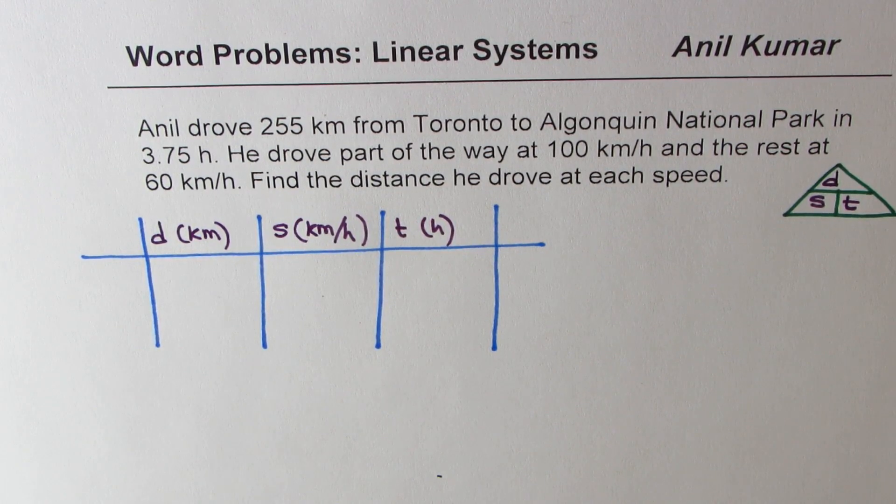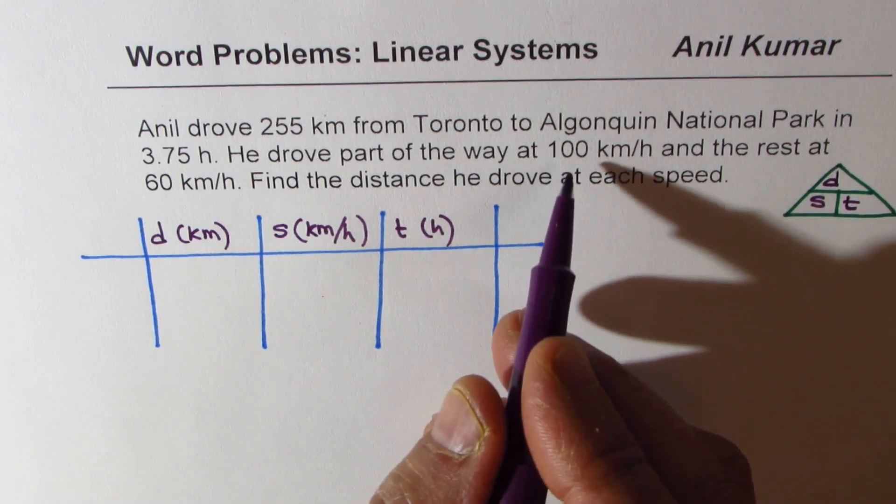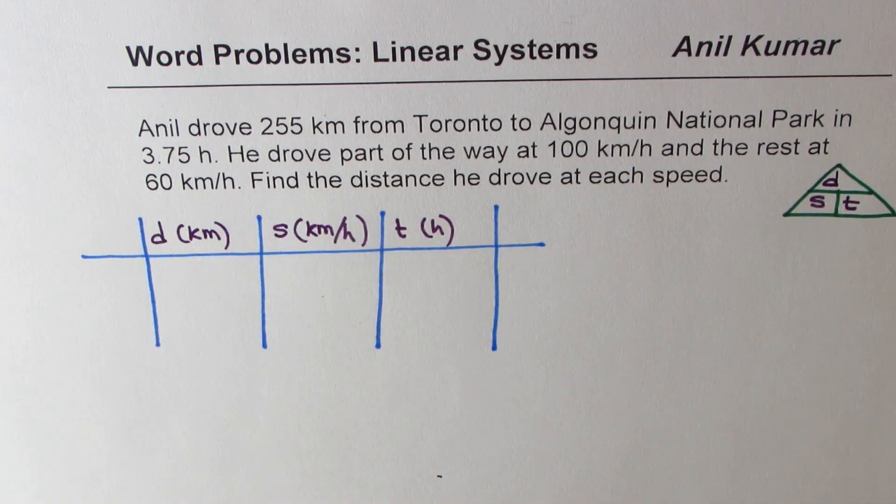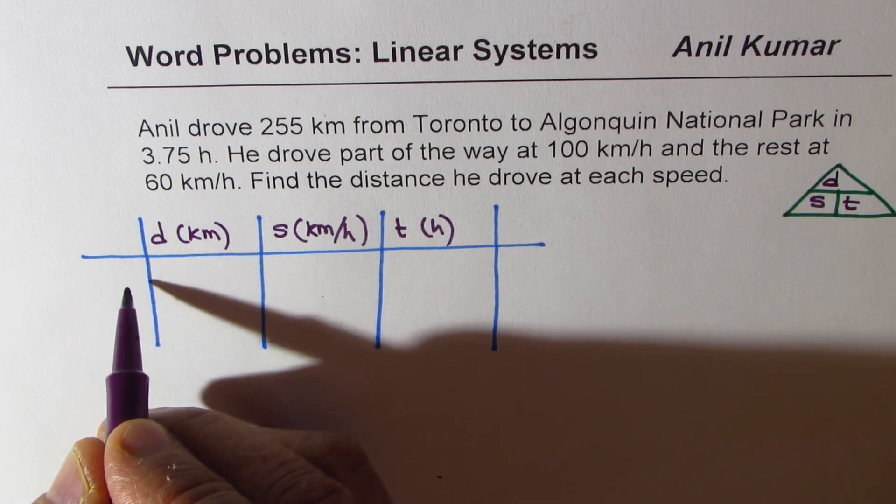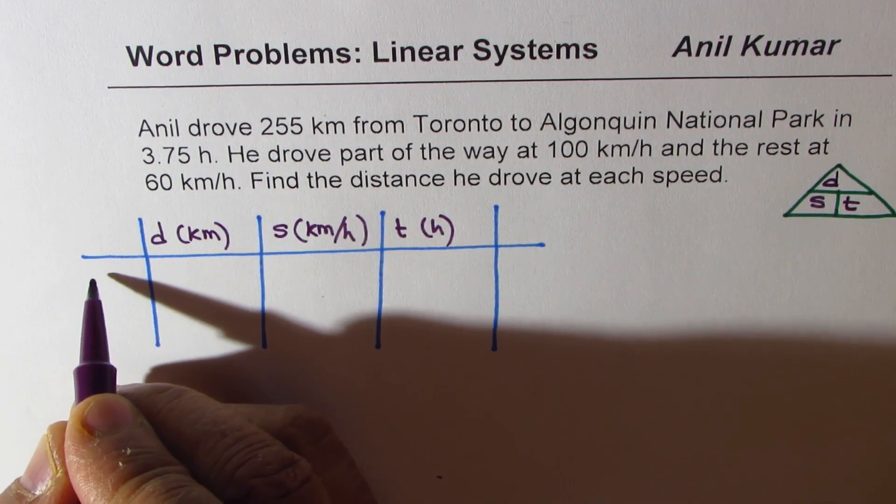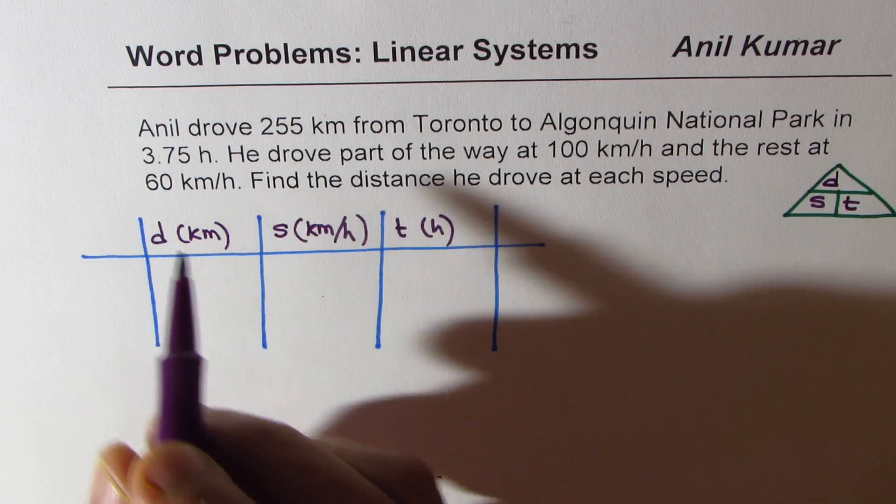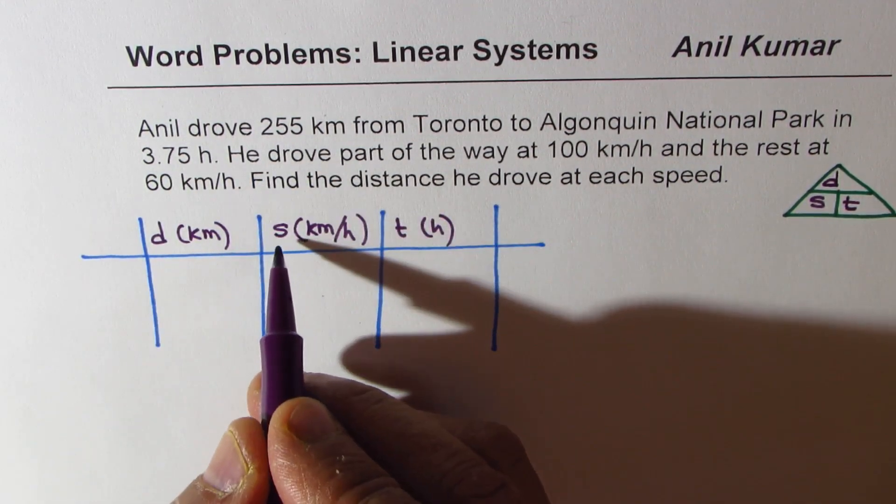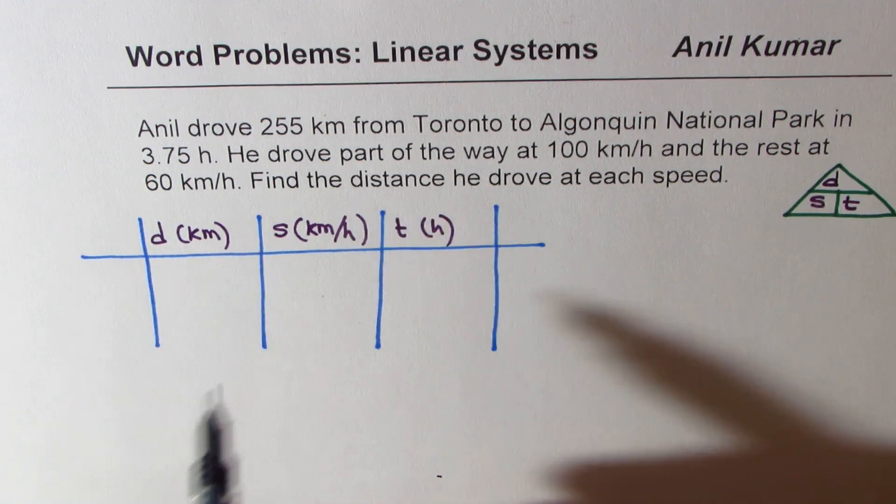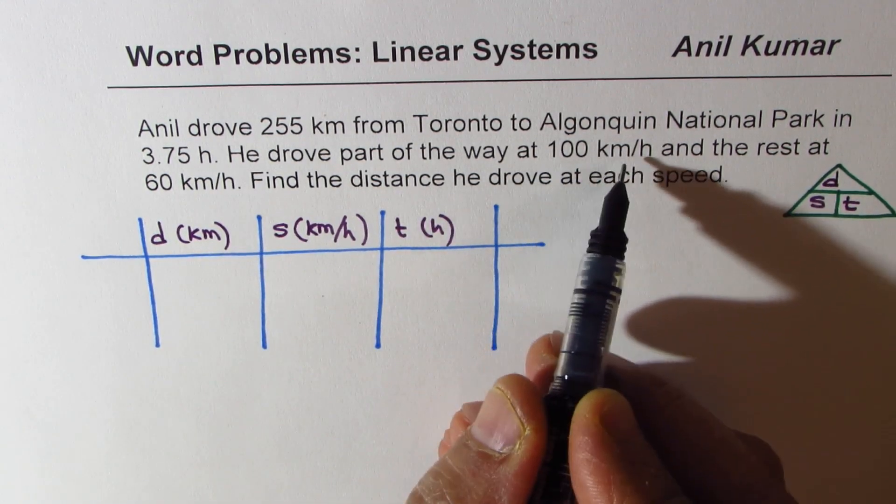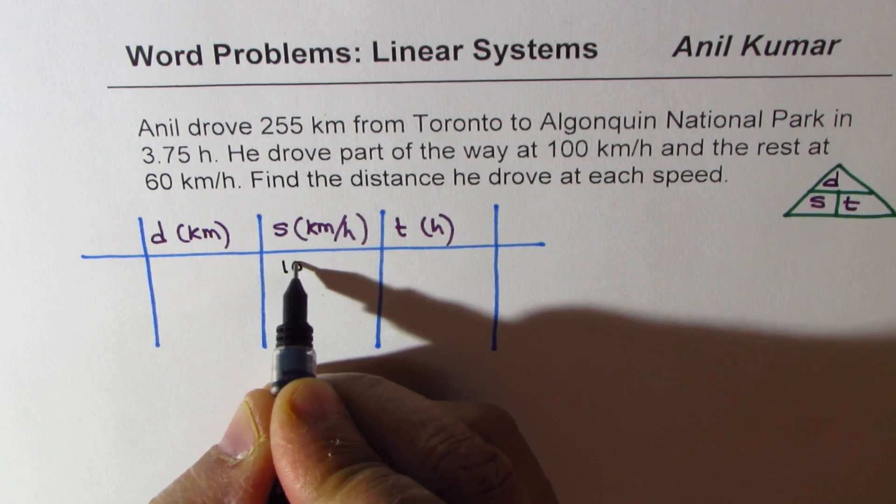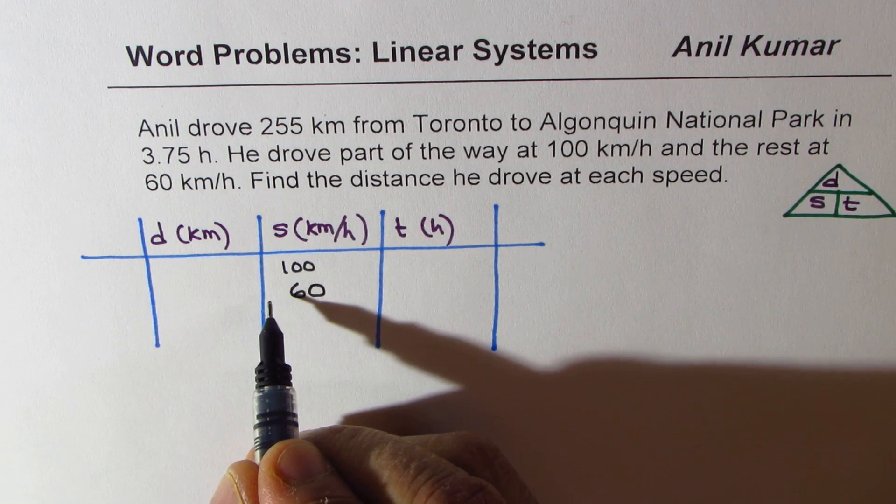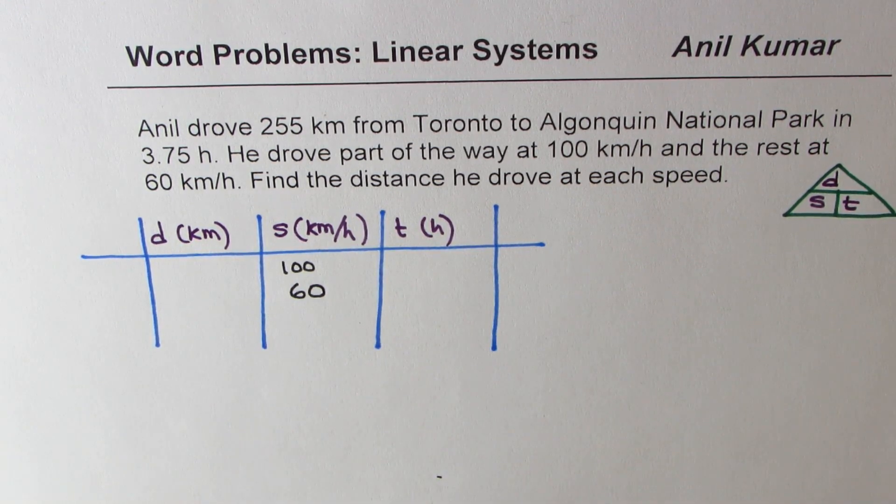Now we are given two different conditions here. One is the speed of 100 kilometers per hour. The other one is 60 kilometers per hour. These are the two conditions. We are given speed, let me write down the values in the table. So we are given 100 kilometers per hour as one speed. The other one is 60 kilometers per hour. And what else are we given?